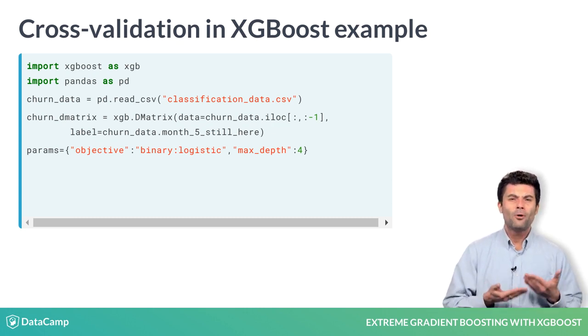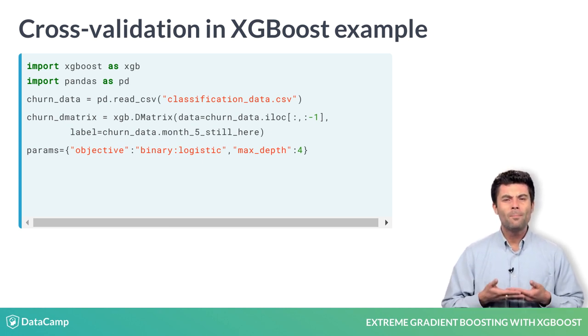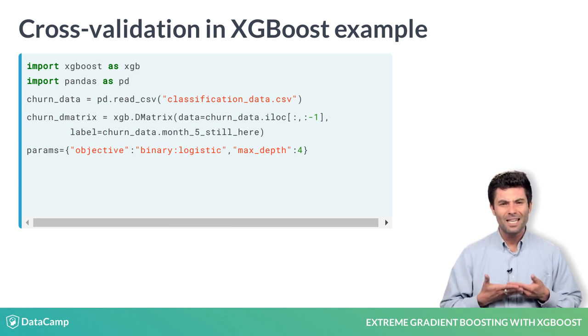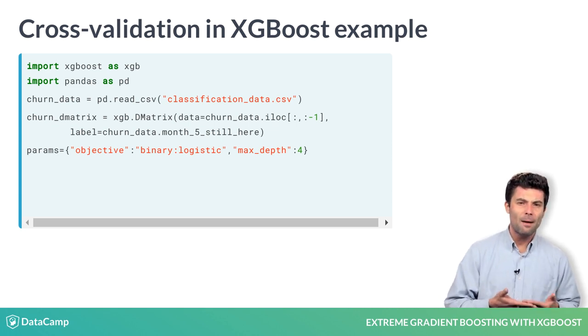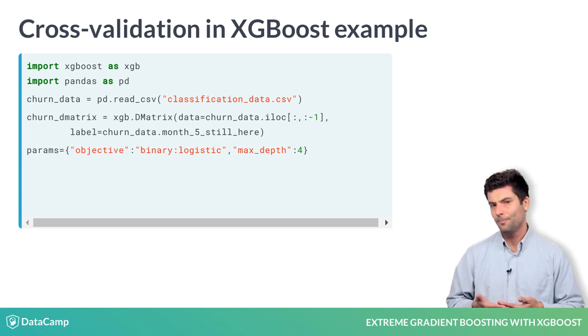Our parameter dictionary here is bare-bones, only providing the objective function we would like to use and the maximum depth that every tree can grow to.